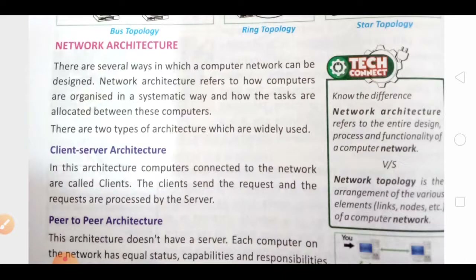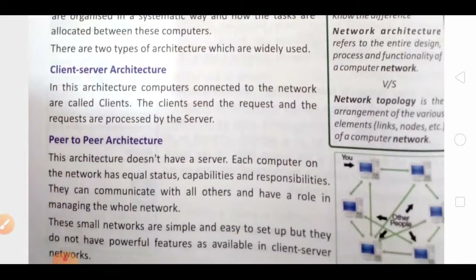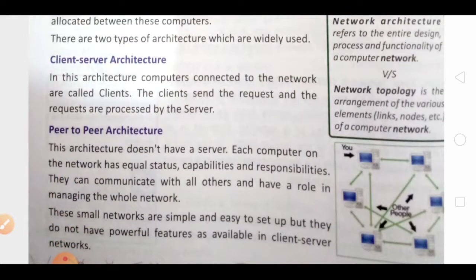The next topic is network architecture — how the computers are communicating with each other. We have simply two types of architecture: the first is client-server architecture and the second is peer-to-peer architecture. To understand the difference, consider a class with a teacher and without a teacher. A class with a teacher is client-server architecture, and without a teacher — when only students are there — is peer-to-peer architecture.